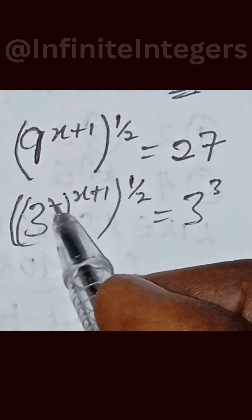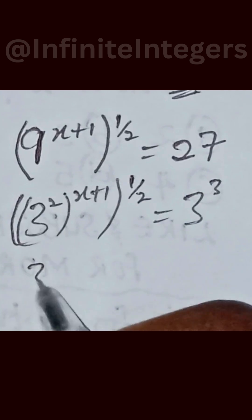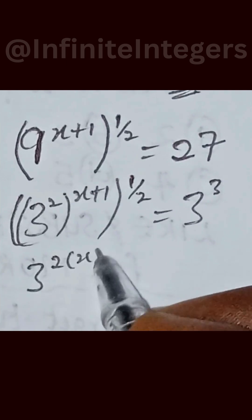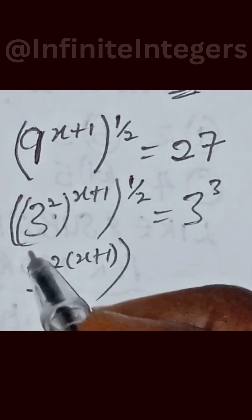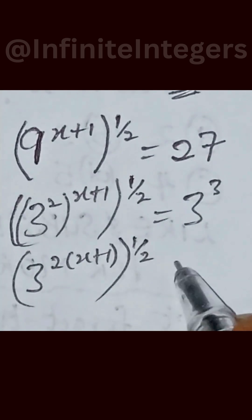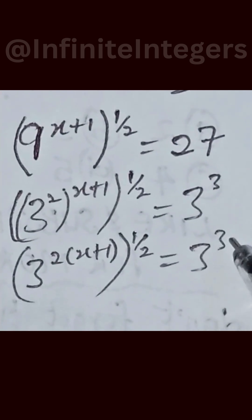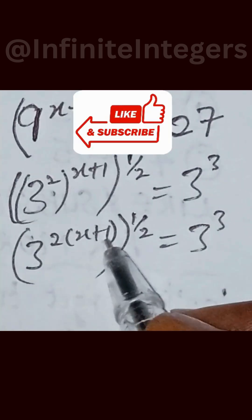So you can now simplify the exponent. You have 3 raised to power 2, into bracket x plus 1, close the bracket, raised to power half, equal to 3 raised to power 3. Then you can also multiply this.